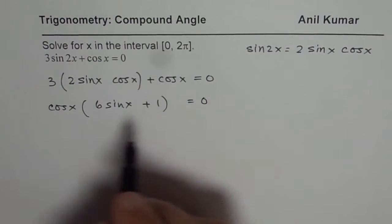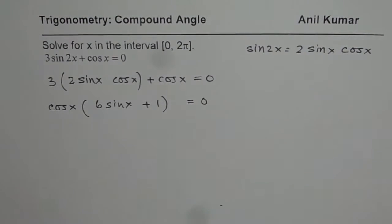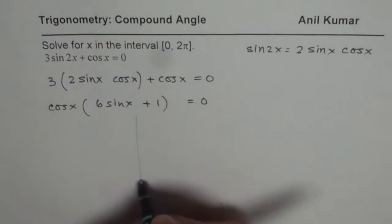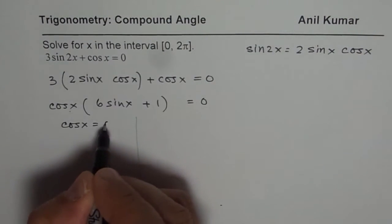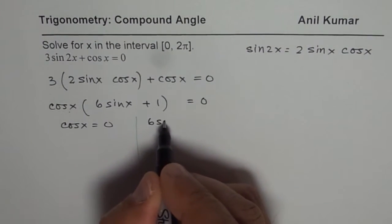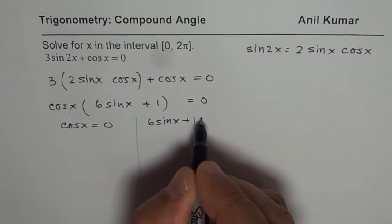For this equation to be true, there are two particular solutions. For one, you could write cosx equals to 0. Right. So cosx equals to 0. For the other, 6sinx + 1 equals to 0.